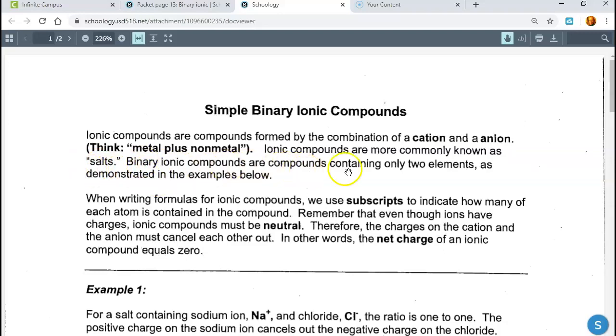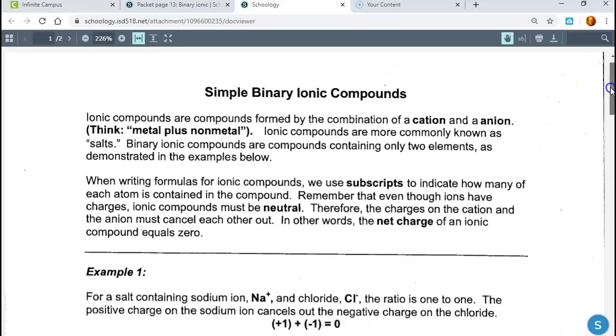Binary ionic compounds are compounds containing only two elements. That prefix bi means two, like a bicycle. When writing formulas for ionic compounds, we use subscripts to indicate how many of each atom is contained in the compound. Remember that even though ions have charges, ionic compounds must be neutral. Therefore, the charges on the cation and the anion must cancel each other out. In other words, the net charge of an ionic compound equals zero.